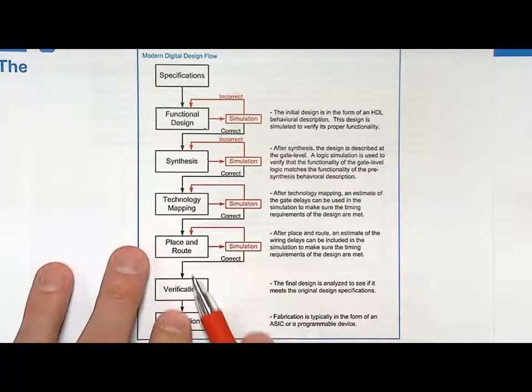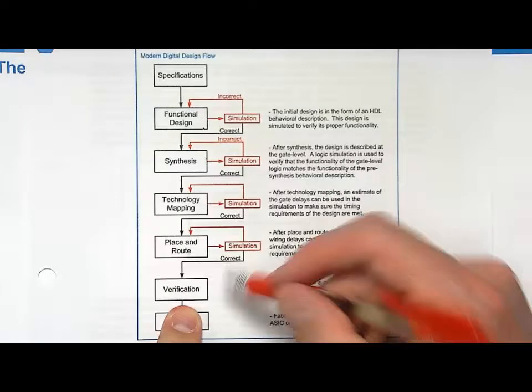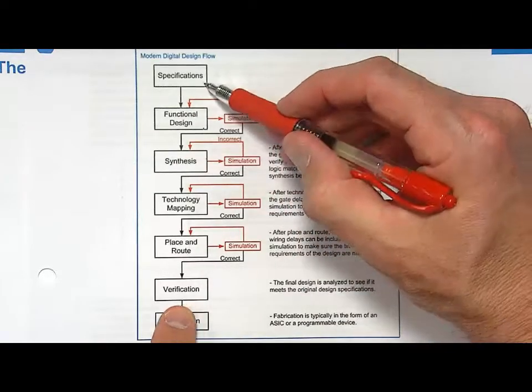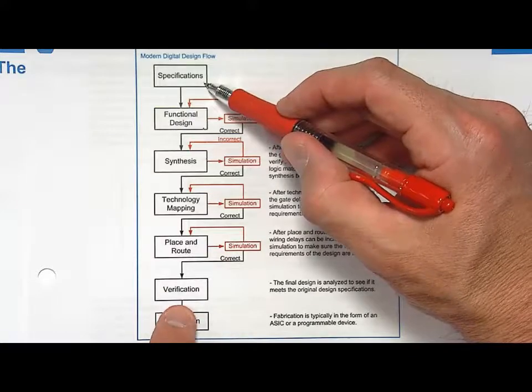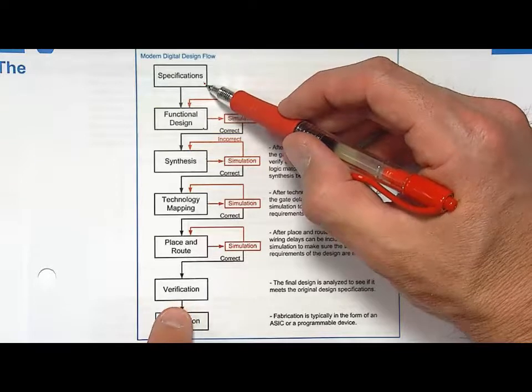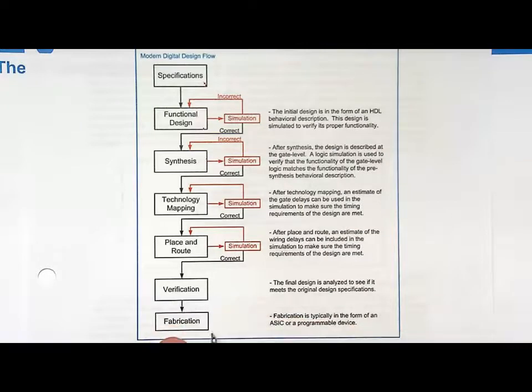Once you do that you can simulate again and make sure that it still meets your specifications. Once you're finally done you get to this final verification step and this is where you check all the way back to did it meet the original specifications? Does it perform the way that you wanted and does it meet things such as timing and power consumption and does it fit in the area that you want? Once you do then you go to the fabrication step.